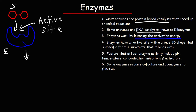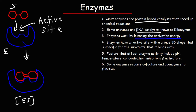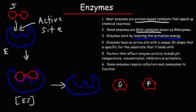Once the enzyme combines with the substrate, we get something called an enzyme-substrate complex, abbreviated E-S. This is when the enzyme is catalyzing the reaction — in this case, the breakdown of sucrose. Once it finishes, it returns to its original shape and the products are released: G for glucose and F for fructose. So we have the original enzyme and these are the products.